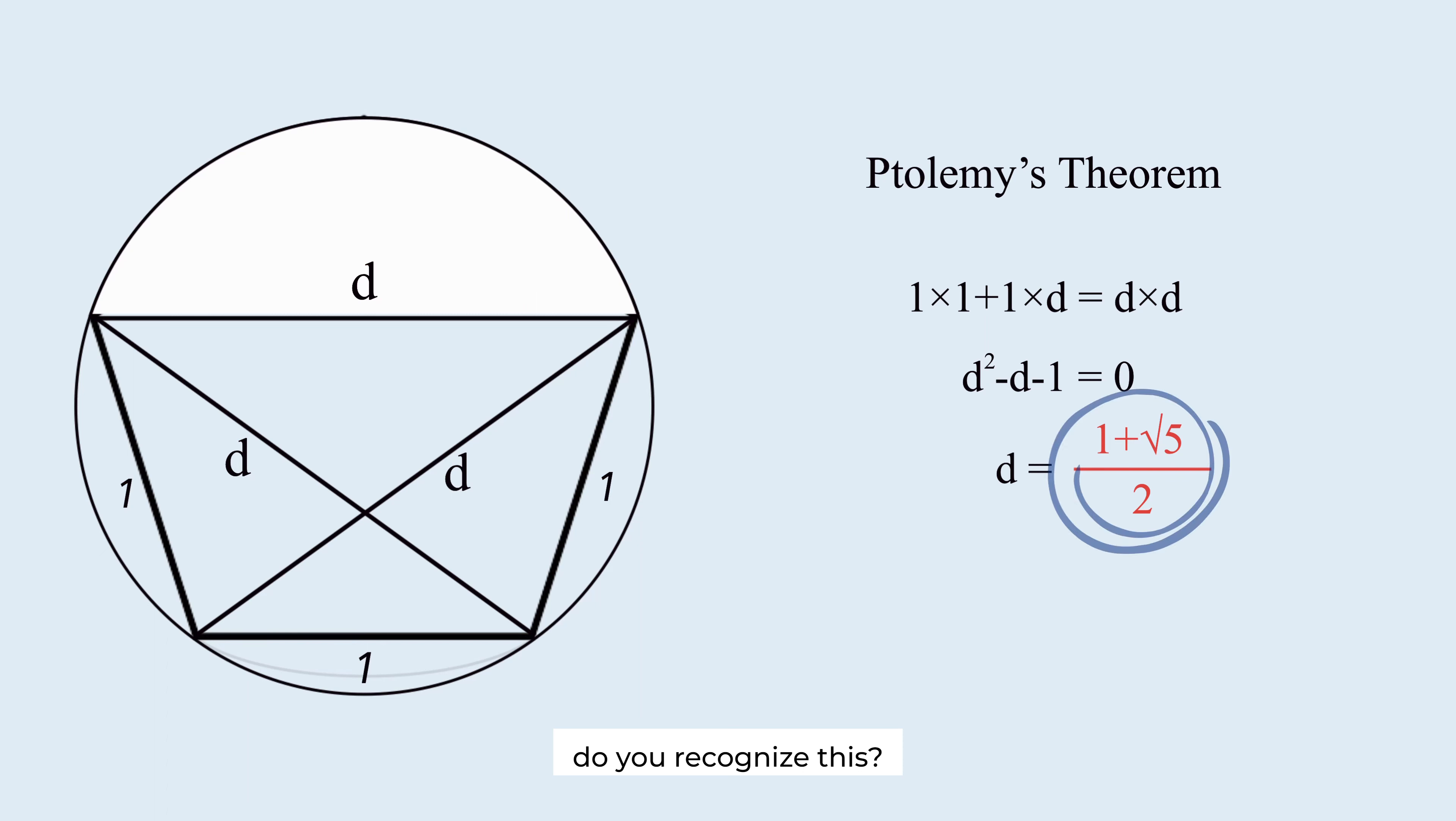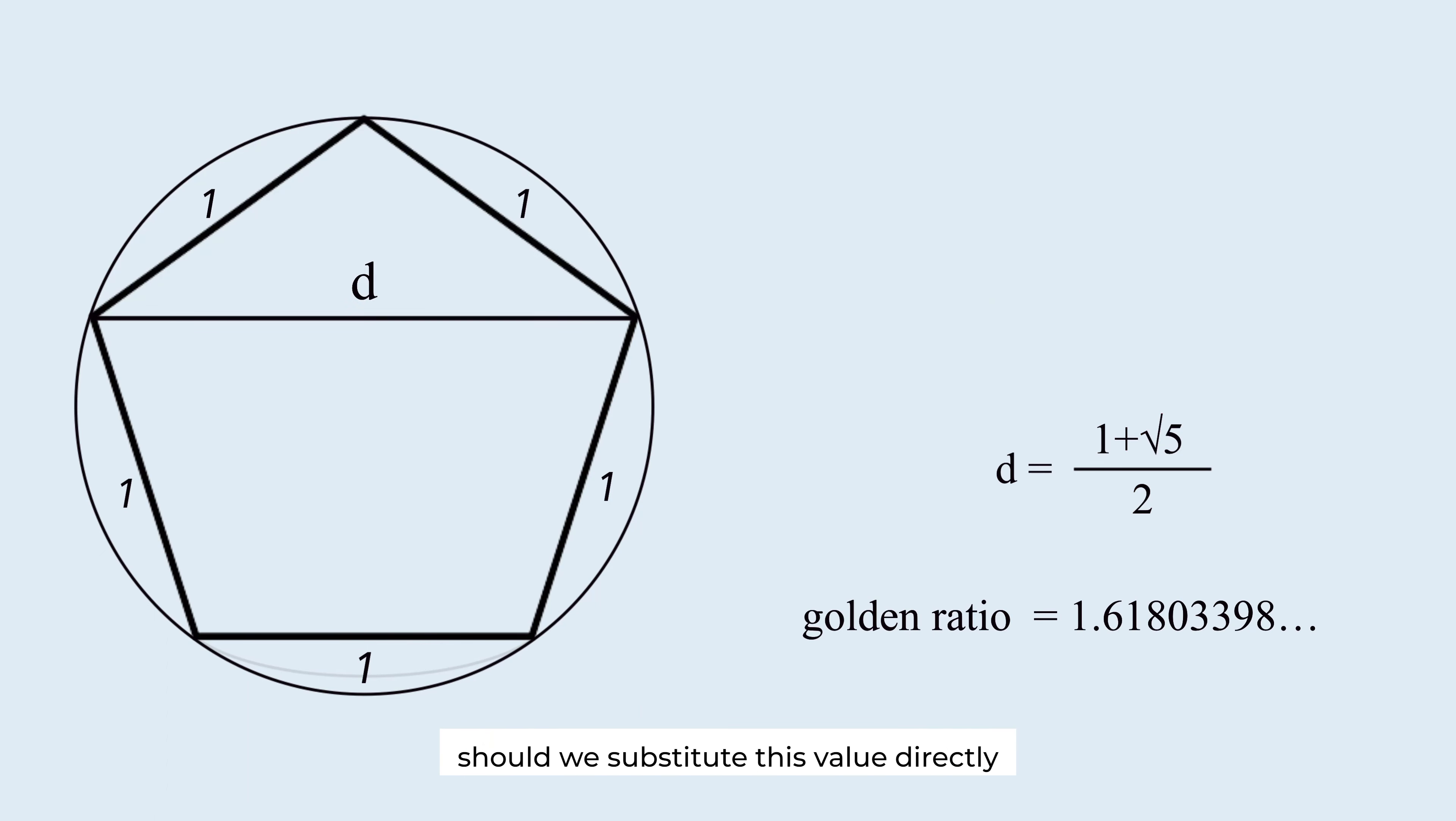Do you recognize this? It is the famous golden ratio. Should we substitute this value directly into this area formula we derived? If we do so, the equation becomes complicated because D is a fraction containing an irrational number.